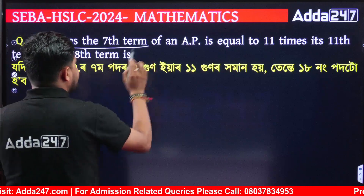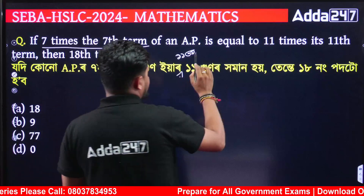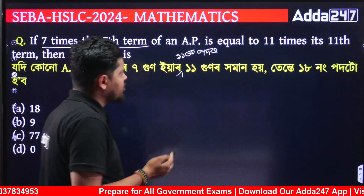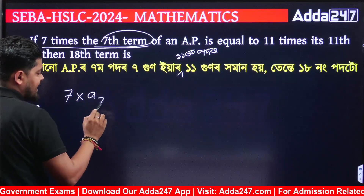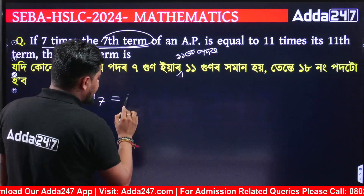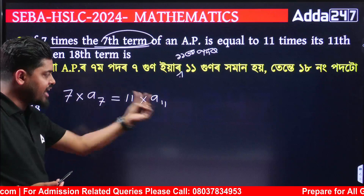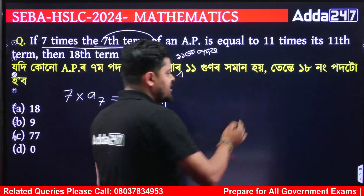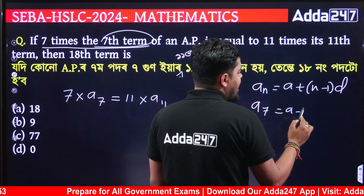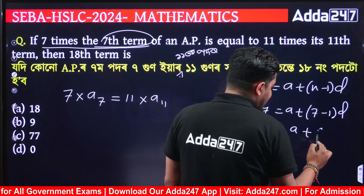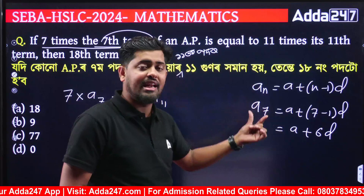7 times the 7th term equals 11 times the 11th term. Here we can use the formula: A(n) equals A plus (N minus 1) into D. So A7 equals A plus 6D and A11 equals A plus 10D.